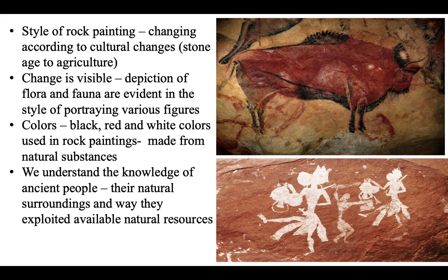Black, red, and white colors were used in the rock paintings, made from natural substances — crushing coal, fruits, or vegetables that would produce color. With the help of rock paintings, we can understand the knowledge of ancient people about their natural surroundings and how they exploited available natural resources. It tells us how innovative man was at that time, using various natural substances to portray his feelings, emotions, and the life that they lived.